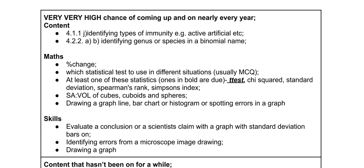This stuff in this box comes up every academic year, so you are most likely going to get a question asking you to identify the type of immunity — whether it's passive, active, natural, or artificial. You will also definitely get a question asking you to identify the genus or species of an organism, usually from the binomial naming system, and also how to correctly write that binomial name.